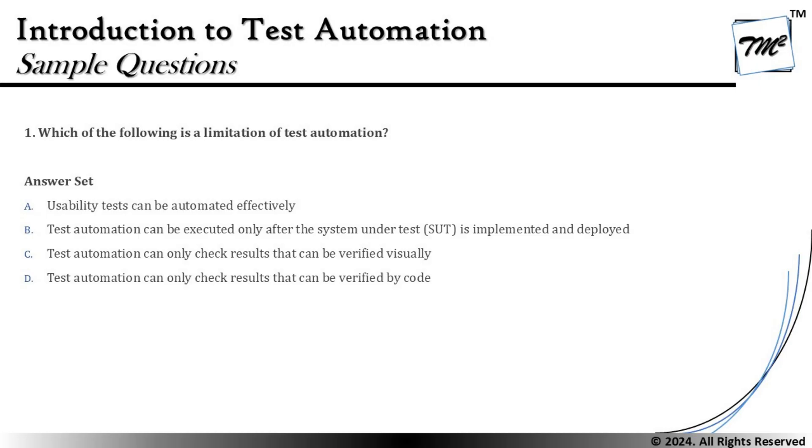Option B says: test automation can be executed only after the system under test is implemented and deployed. Automation should not be seen as something limited to dynamic testing. A tool performing required activities — such as static analysis tools — can be used prior to implementing and deploying code. So automation is not restricted to post-deployment activities.